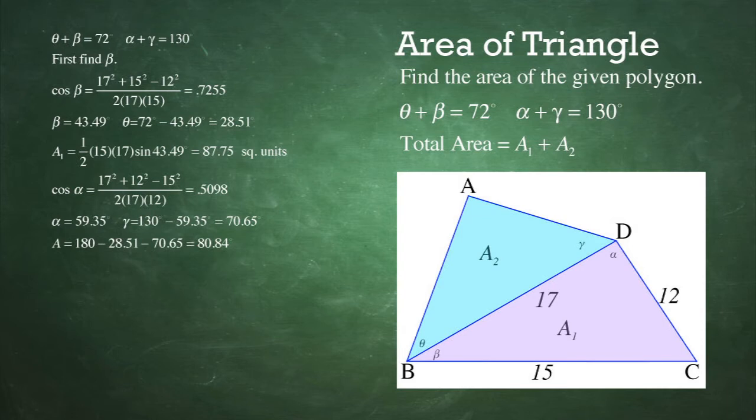So now, in triangle ABC, we have angle B, or theta in this diagram, we have angle D, or gamma in this diagram. So we can find angle A is simply 180 minus 28.51 minus 78.65. So angle A is 88.84.